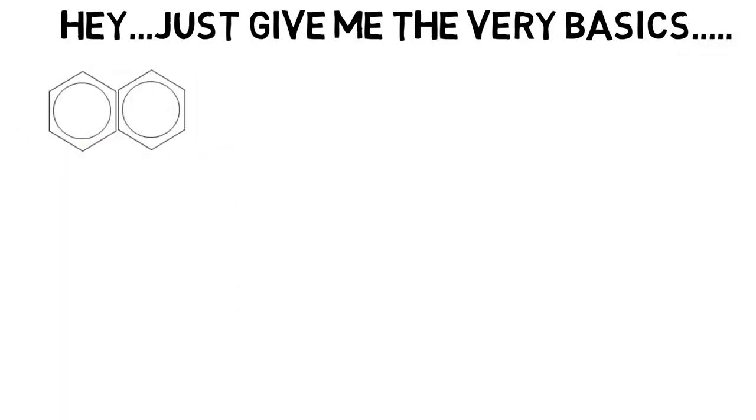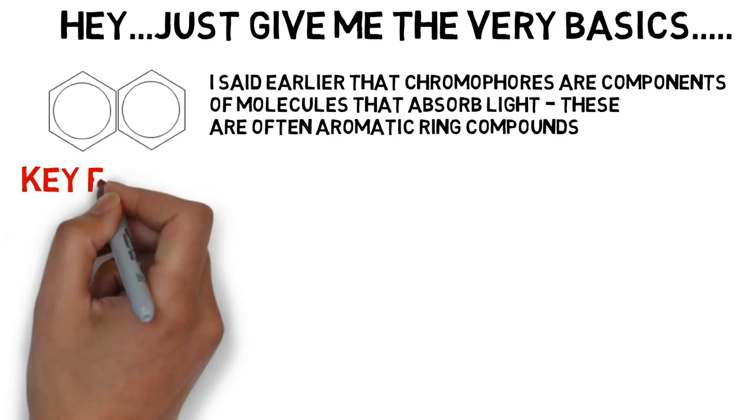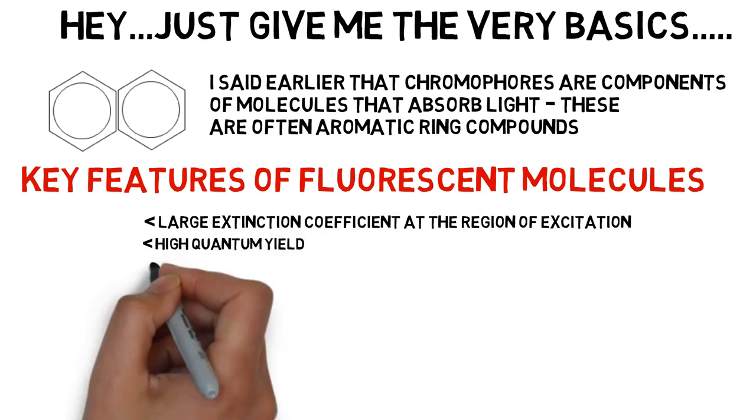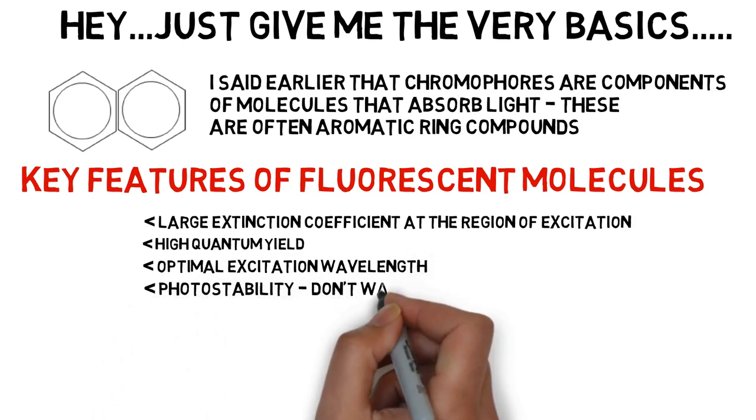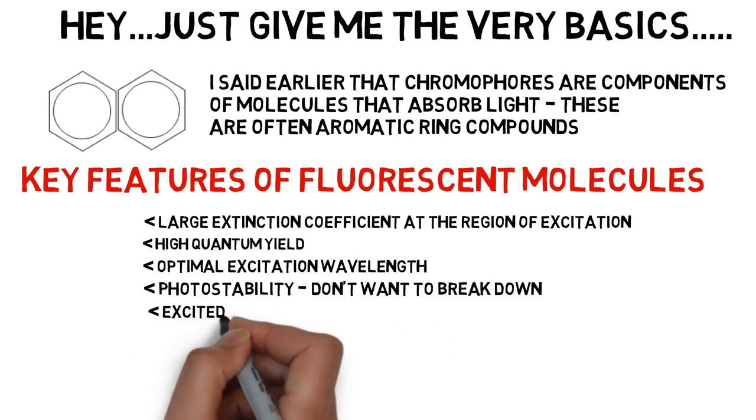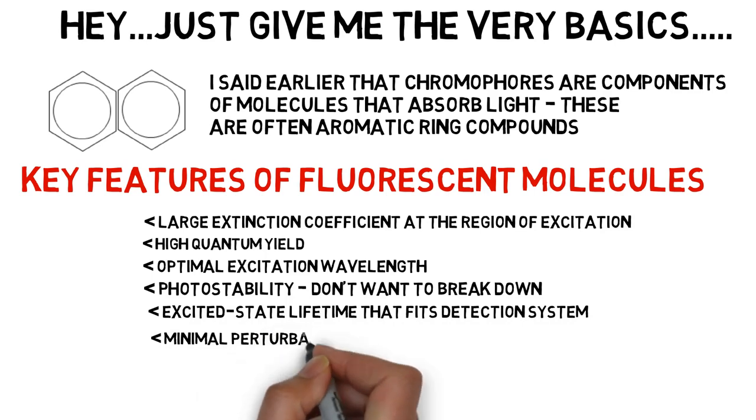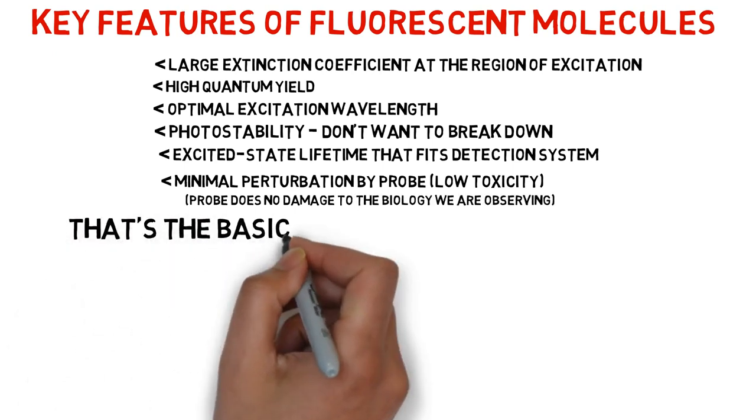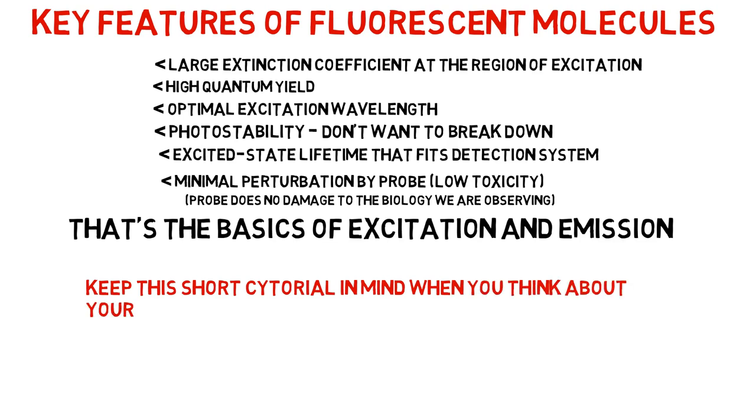I said earlier that chromophores are components of molecules that absorb light. These are often aromatic ring compounds. So what are the key features of fluorescent molecules? Here are the take-home messages. You need a large extinction coefficient at the region of excitation. You need a high quantum yield. You would like to have an optimal excitation wavelength for the light source that you have. In terms of photostability, we don't want the molecule to break down easily. And the excited state lifetime needs to fit with the detection system capability. And finally, there needs to be minimal perturbation by the probe. That means it has to have low toxicity and the probe itself does no damage to the biology we are observing. These are the key features that lead to good fluorescent molecules.